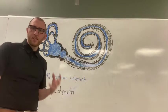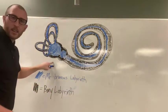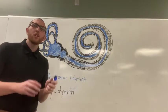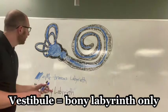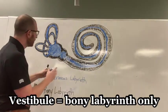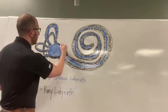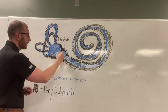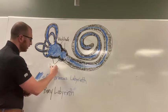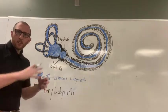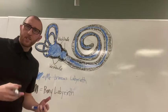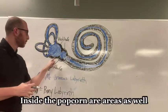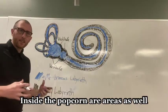When we look at the vestibular apparatus, we see first something called the vestibule. The vestibule is only the bony labyrinth — it's the outer covering. I call it a piece of popcorn: one section of popcorn is a good way to think about that outer bony labyrinth in this area.